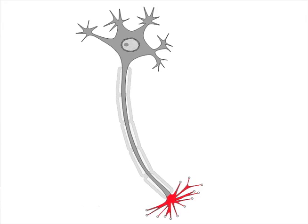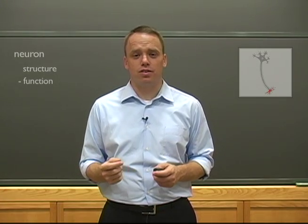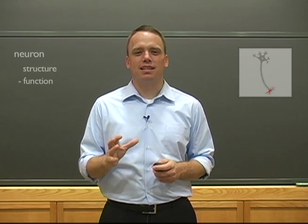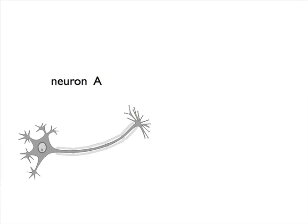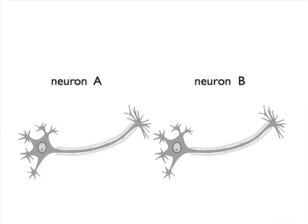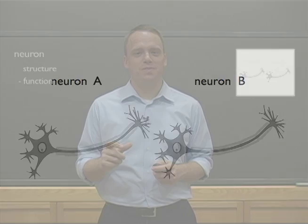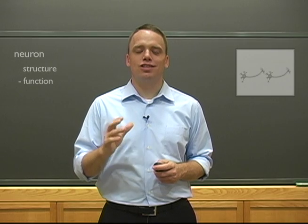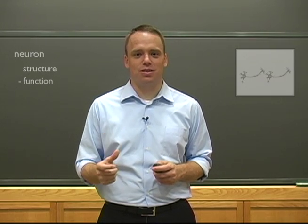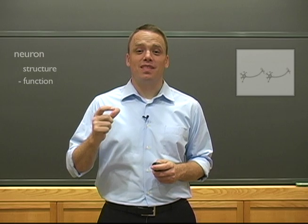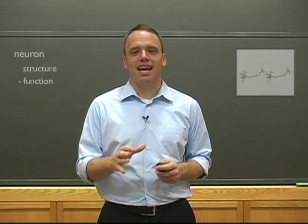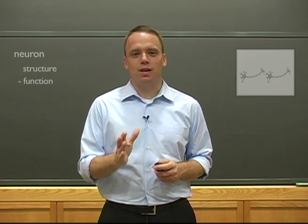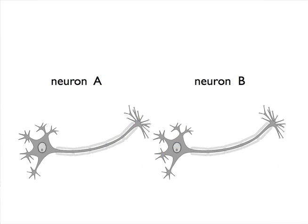In reality, a neuron is going to be connected to thousands of other neurons. But for our purposes, let's keep it simple. Let's ask this question. How does neuron A communicate with neuron B? It turns out, to answer that question, we have to appreciate that neurons do not indiscriminately communicate with other neurons. In fact, they mainly communicate at very specialized locations called synapses. In this case, we're talking about a synapse between the axon terminal of neuron A and the dendrite of neuron B.